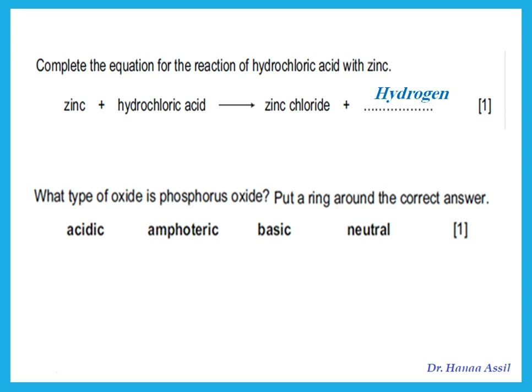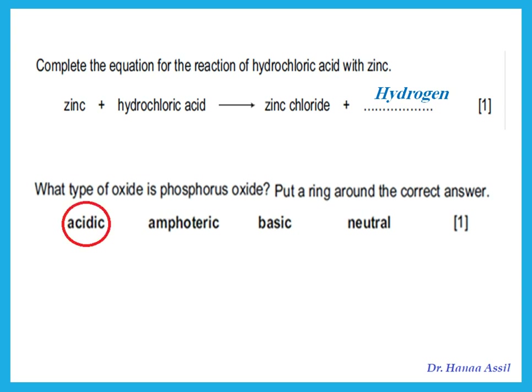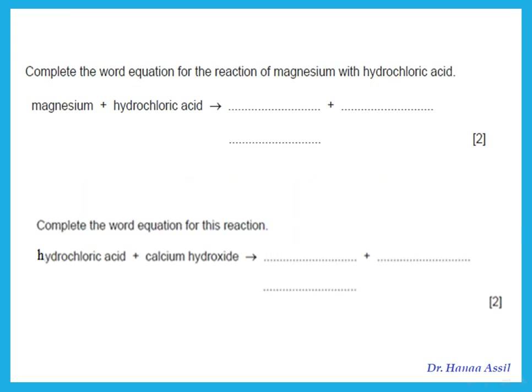Which type of oxide is phosphorus oxide? Looking at the periodic table, phosphorus is a non-metal, so its oxide is acidic. For the word equation: magnesium plus hydrochloric acid — metal plus acid gives a salt. The salt is magnesium chloride, plus hydrogen gas.